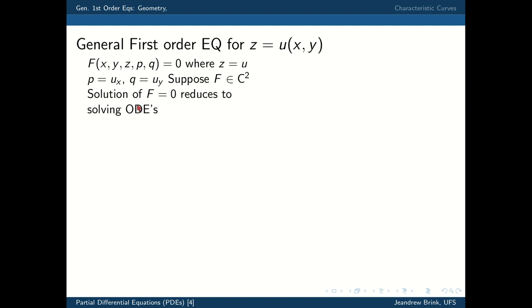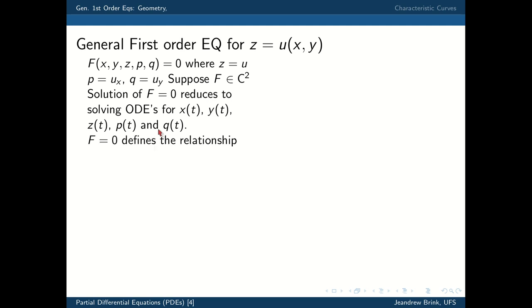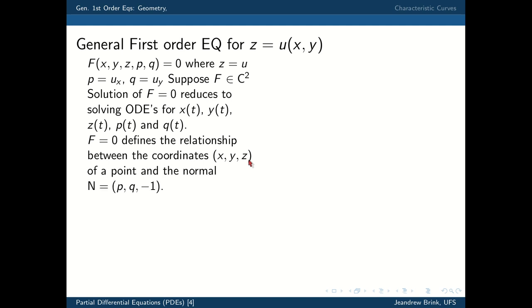The solution of f equals zero can be reduced, as in the quasi-linear case, to solving ODEs for x, y, and z. But in this general situation, we're going to have to add two more, namely what the derivatives are at each point. To understand how this arises, let us look at what f equals zero defines. It defines a relationship between the coordinates at a specific point — x, y, and z — and the normal to the surface at that point, which we can parametrize by p, q, minus 1.